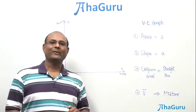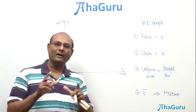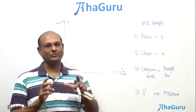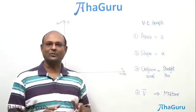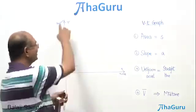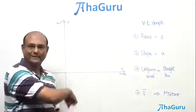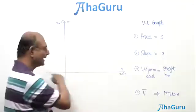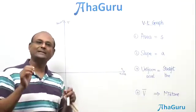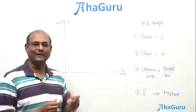Welcome. Today we are going to study velocity-time graphs. You have already probably seen position-time graphs, and probably got an introduction to velocity-time graphs and acceleration-time graphs. A velocity-time graph has velocity on the y-axis (vertical axis) and time on the horizontal axis. It is simply a plot of velocity at various time instants.